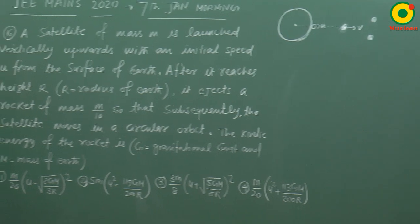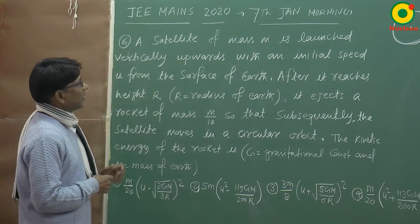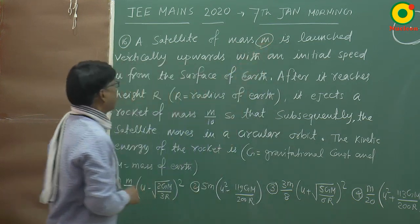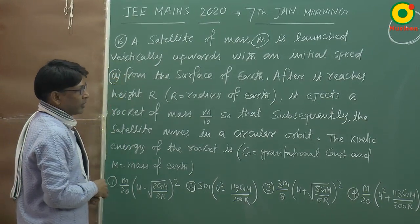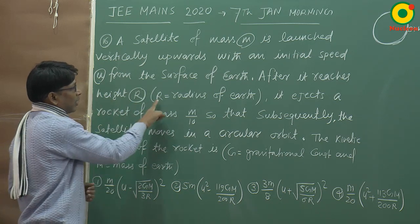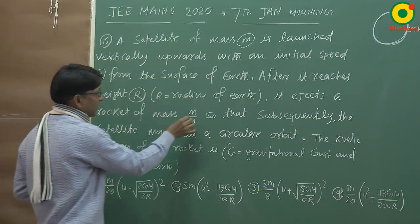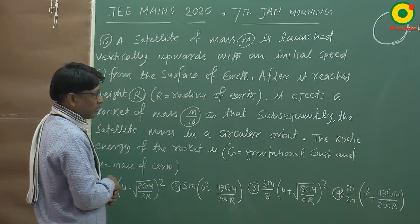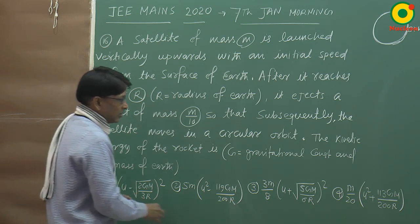Question number 16 is related to gravitation. A satellite of mass M is launched vertically upwards with an initial speed u from the surface of Earth. After it reaches height R, where R is the radius of Earth, it ejects a rocket of mass m/10, so that subsequently the satellite moves in a circular orbit. We need to find the kinetic energy of the rocket. G is the gravitational constant and capital M is the mass of Earth.